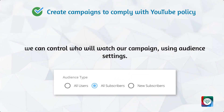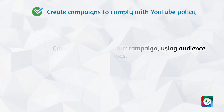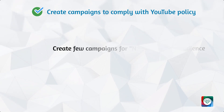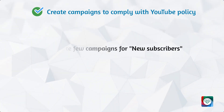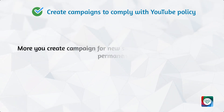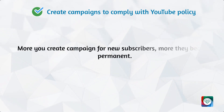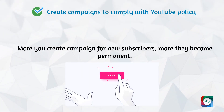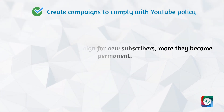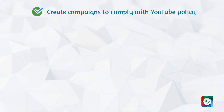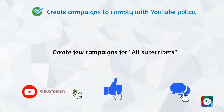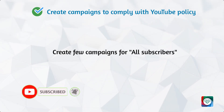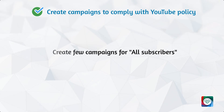Now, to comply with YouTube policy, if you create a few campaigns for new subscribers, then new subscribers will like, watch, or comment on your channel, so it complies with YouTube policy. The more you create campaigns for new subscribers, the more they become permanent. Similarly, if you create a few campaigns for all subscribers, then all of your subscribers will watch, like, or comment on your channel, so they become more permanent.